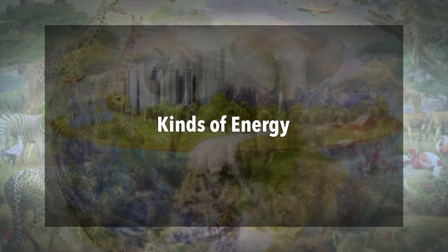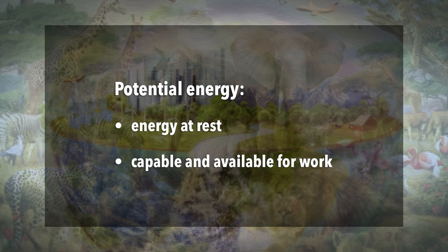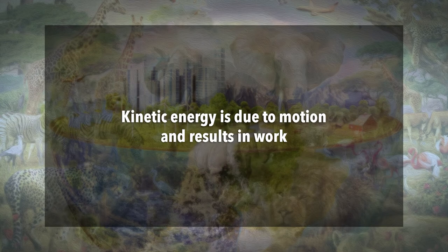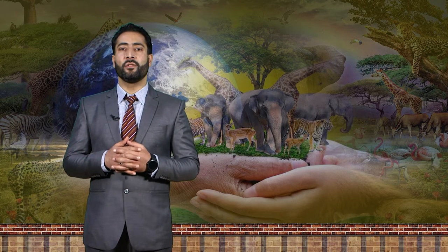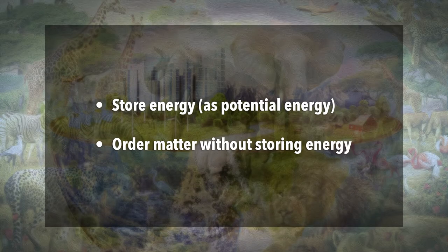Now the kinds of energy. There are two kinds of energy: potential and kinetic. Potential energy is energy at rest — it is capable and available for work. Kinetic energy is due to motion and results in work. Work that results from the expenditure of energy can be of two kinds: it can store energy as potential energy, or it can order matter without storing energy.